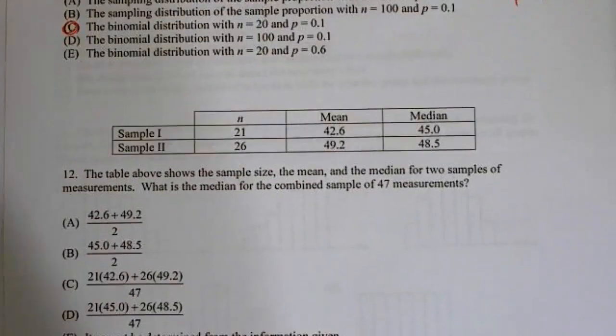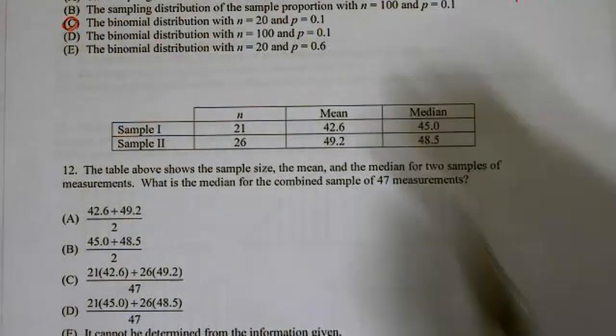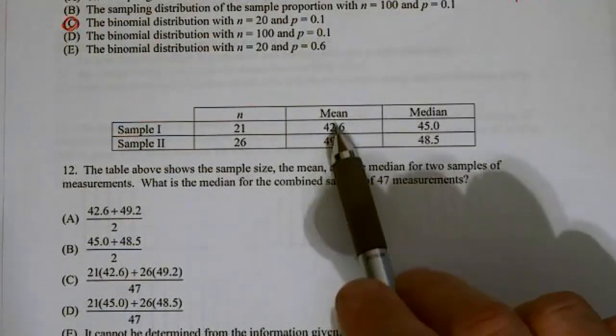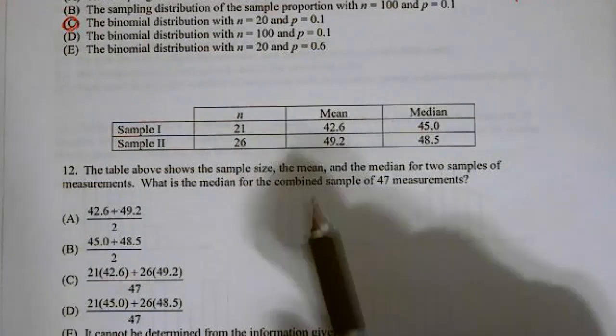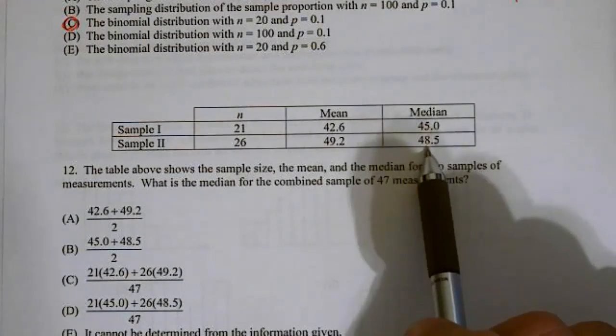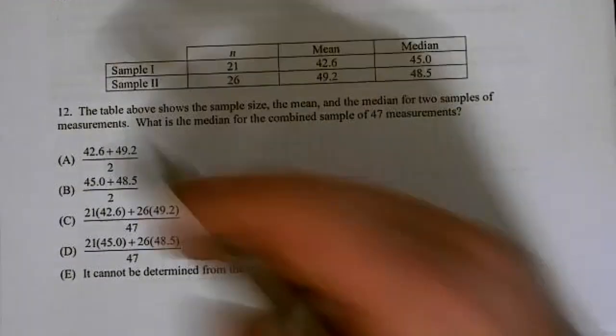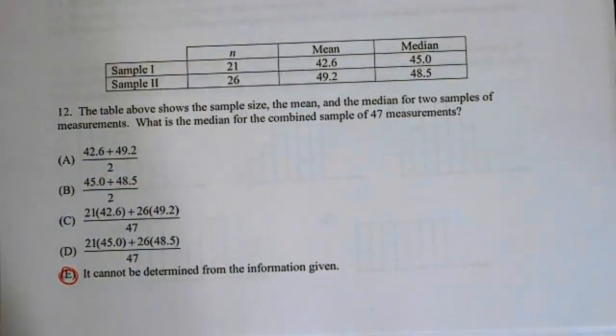Number 12. The table above shows the sample size, the mean and median for two samples of measurements. What is the median of the combined sample of 47 measurements? Well, I can add means. So I could add means and I could weight them and that would be fine. But here, I have medians. The only way I can do medians is I have every single value and line them up least to greatest.